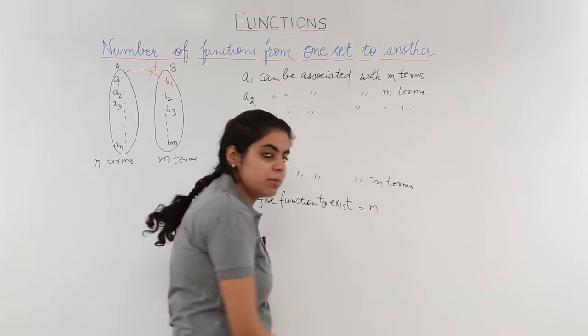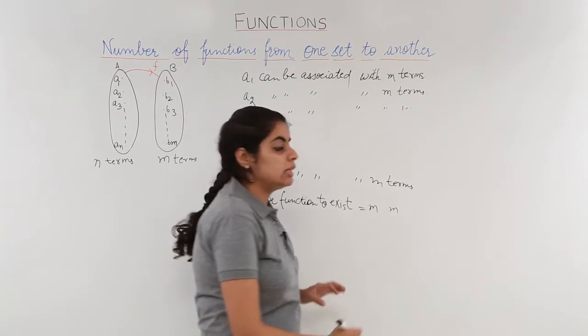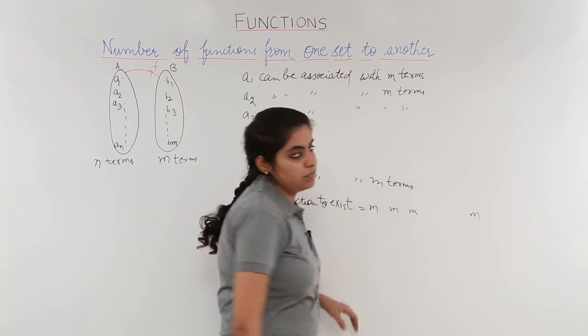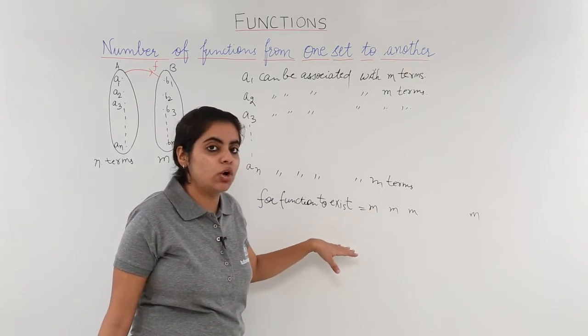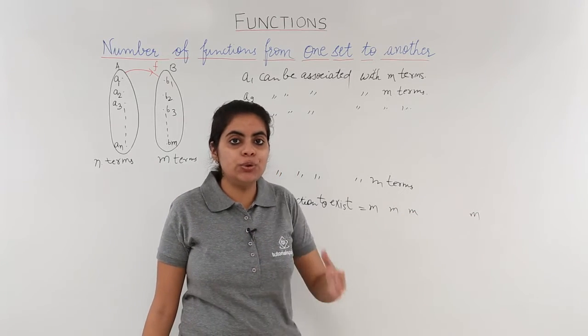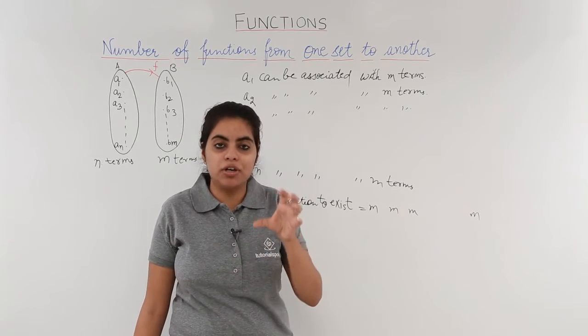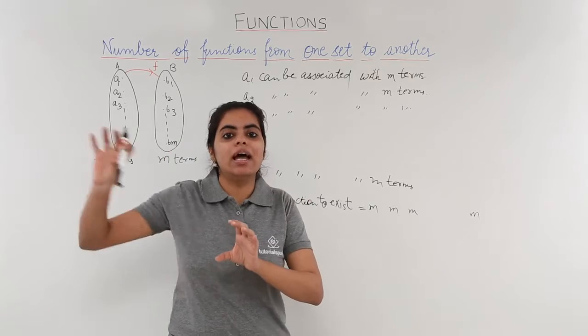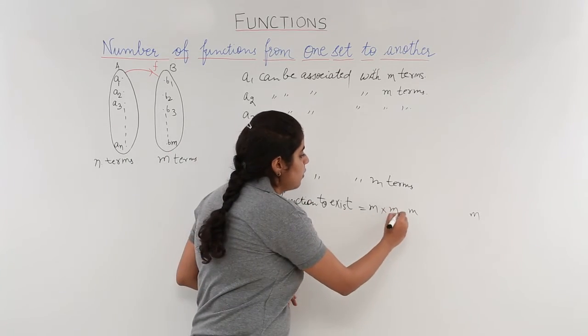So it is like first M be associated, then the second M be associated, then the third M be associated, and then the last M be associated. Now what mathematical algebraic operation should be applied to these M's? You know that in probability we studied the product rule. When we say that the first condition and then the second condition and then the third condition, that and is nothing but multiplication.